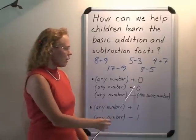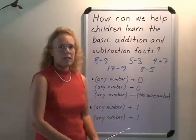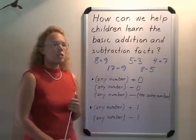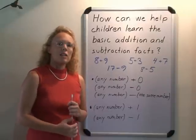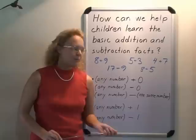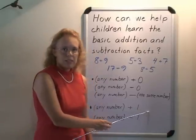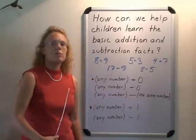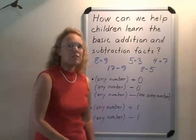Or any number take away zero, it doesn't change the number, or any number take away the same number, like nine minus nine. Children will eventually learn it's zero, and they need to be taught that. They don't know it just in the beginning, and any number plus one is the next number. This is another principle that children need to learn and practice. Any number take away one is the previous number.